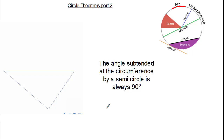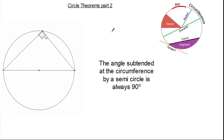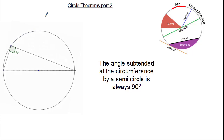Now let's look at it in context of our circle. Using this as a basic reference, the angle subtended at the circumference by a semicircle is always 90 degrees. This means the angle made by connecting the ends of the semicircle to the circumference is always 90 degrees. Given a circle doesn't have a top or bottom, we can also have a subtended angle here. You can see from this demonstration, as I move the angle along the circumference it will always be 90 degrees.